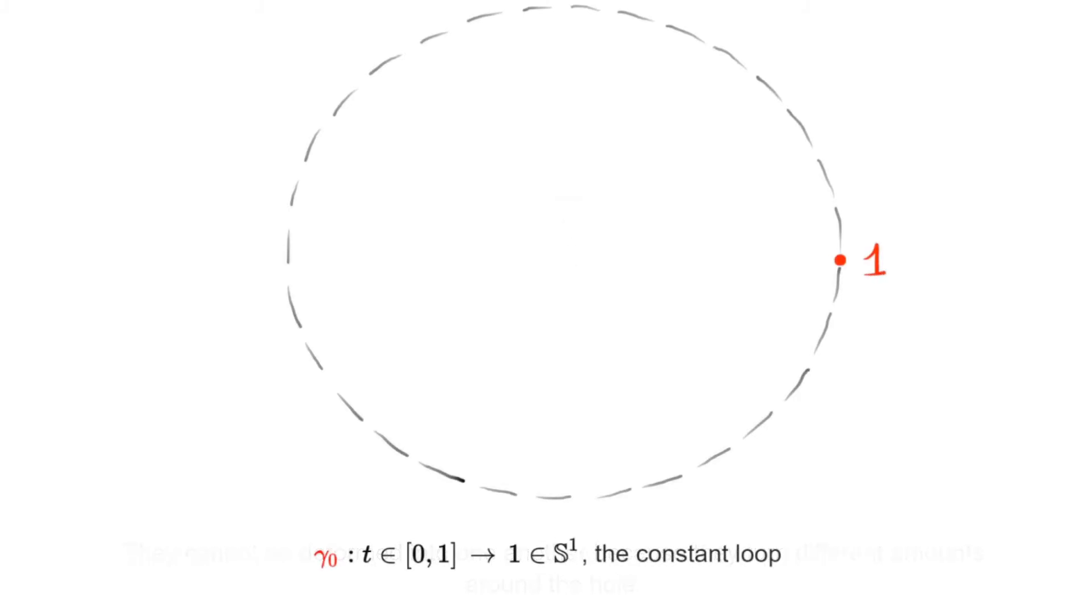The simplest loop is the constant loop, that is, for every t we simply send t to the value 1. You should think of the constant loop as a loop that is not tied to the hole.